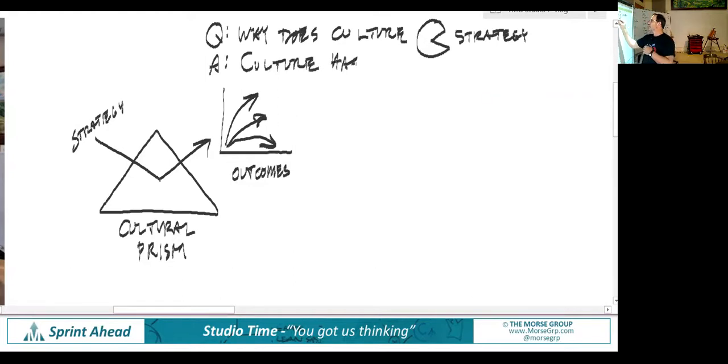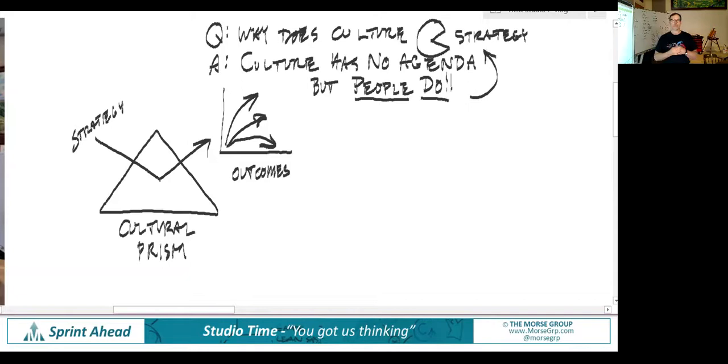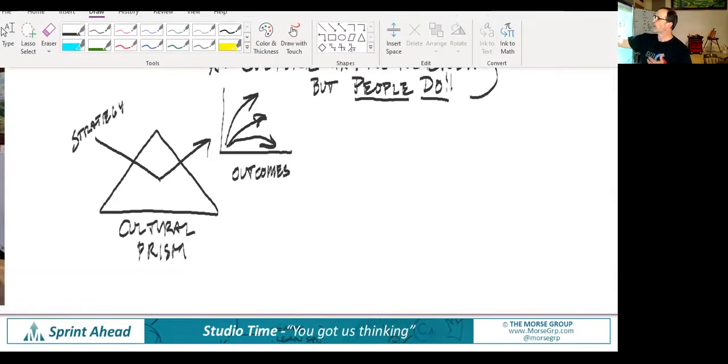It just reacts off of what you feed it. So we say culture has no agenda, but people do. It's the actions of people that cause this to start to happen, why culture eats strategy. Let me change my marker here a little bit.